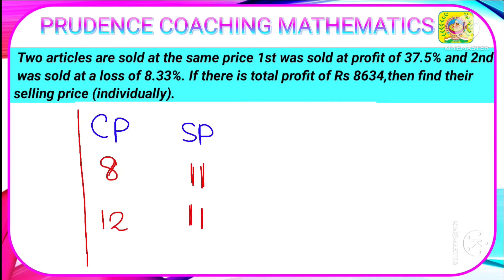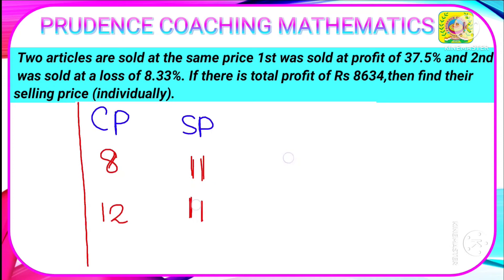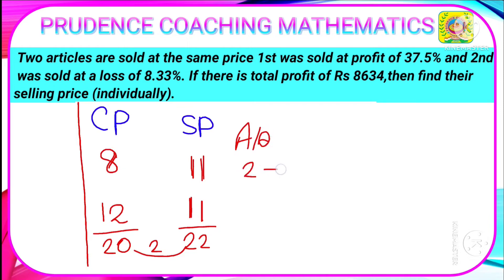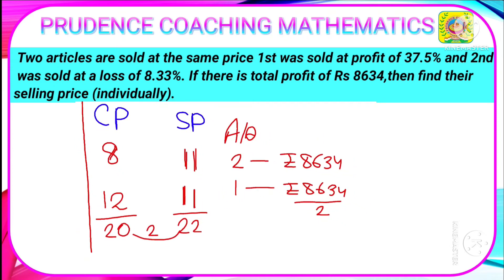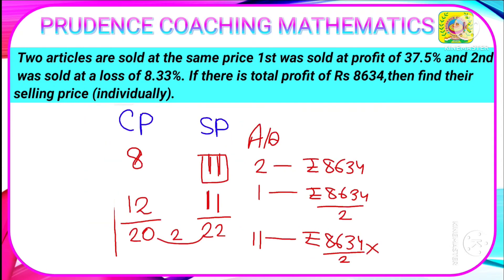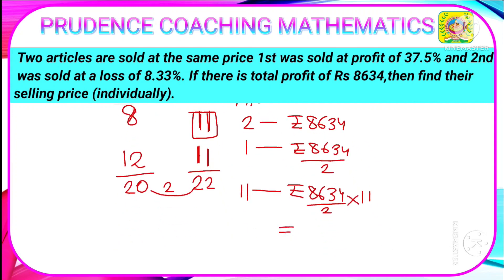The total CP is 20 (8 plus 12) and total SP is 22, so profit = SP minus CP = 2 units. According to the question, 2 units equals ₹8634, so 1 unit = ₹8634 divided by 2. You are asked to find the selling price, which is 11 units, so multiply by 11 to get the final answer.